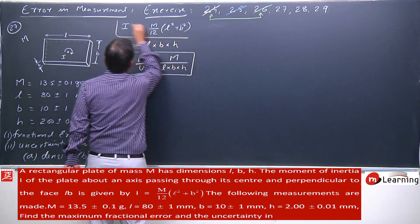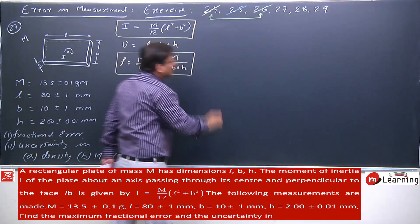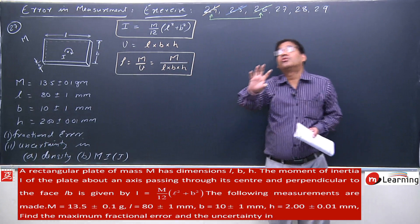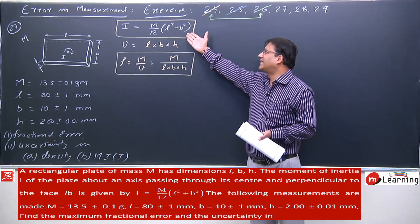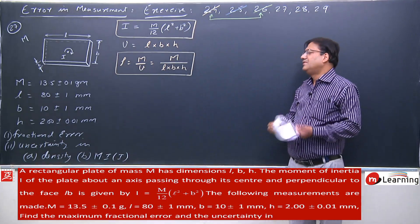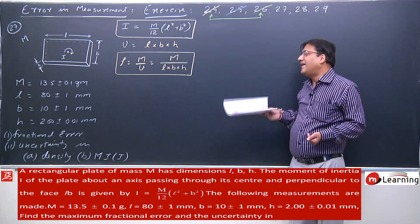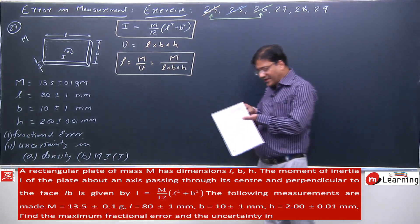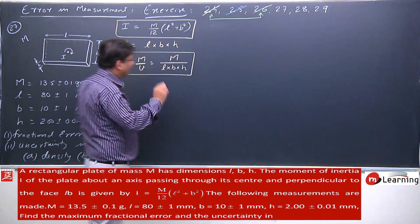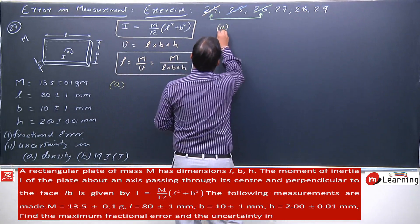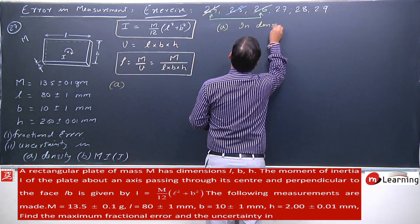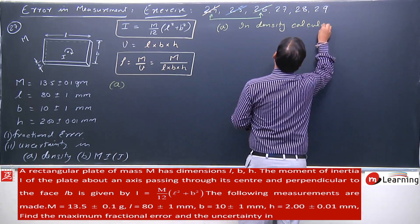Since density is well known we were not given its formula, but moment of inertia is sometimes not known — that is why its formula was given. For density, since all terms are in product and division, relative errors are added: dρ/ρ = dm/m + dL/L + dB/B + dH/H.